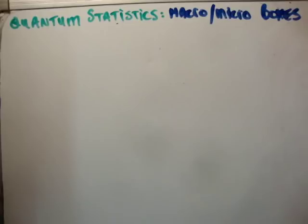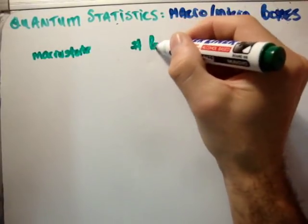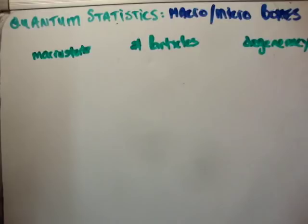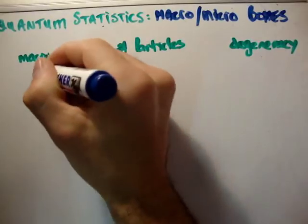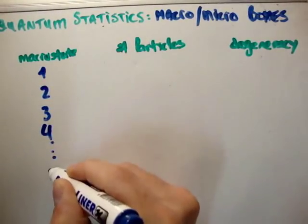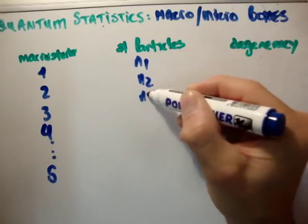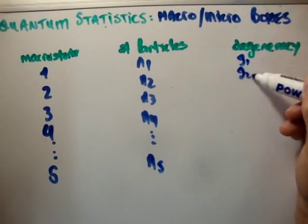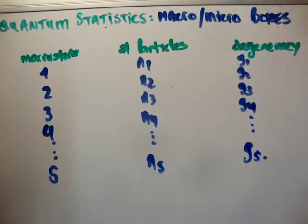Let me write this in a new way. We have three columns: the macro state (numbered 1, 2, 3, 4, down to S), the number of particles (n_1, n_2, n_3, n_4, down to n_s), and the degeneracy (g_1, g_2, g_3, g_4, down to g_s). Think about electron orbitals — each shell might be a macro state and each sub-shell a micro state. That's another way of looking at it.